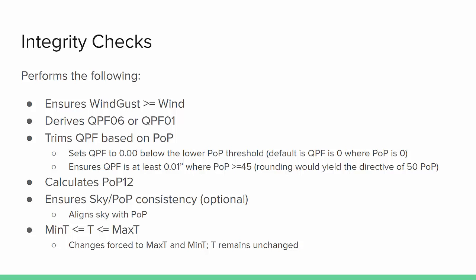QPF is set based on POPs, where QPF is set to 0 below the lower POP threshold, which is defaulted to 0. It also ensures QPF is at least one hundredth where POP is greater than or equal to 45. POP 12 is calculated in this step, and there is a check to ensure POP and sky consistency; however, this is optional and not enabled in most offices.